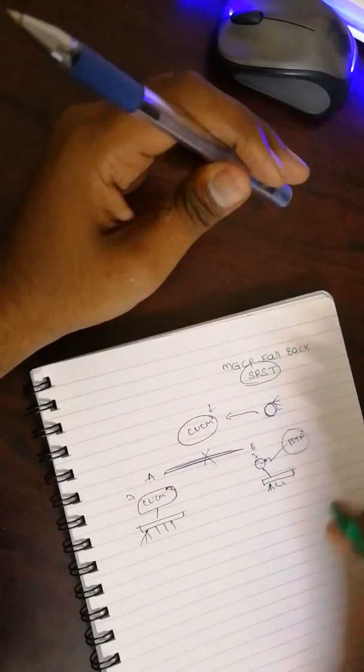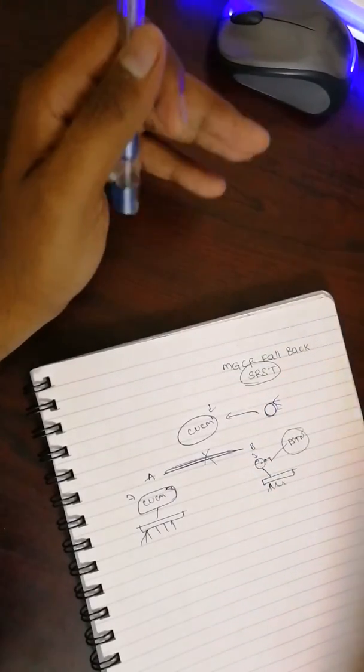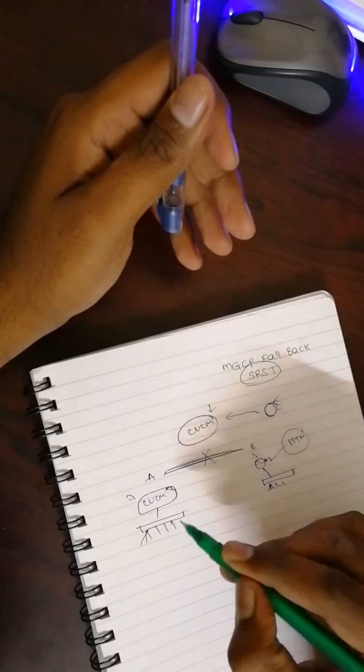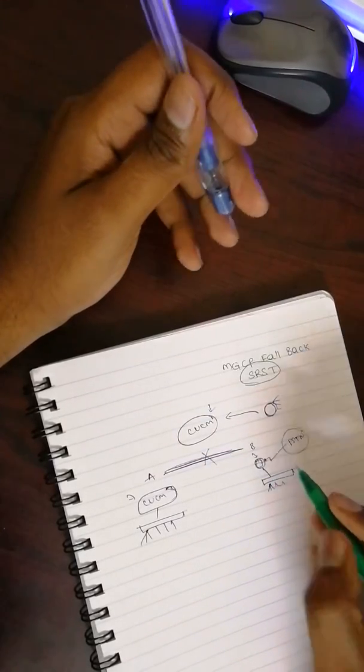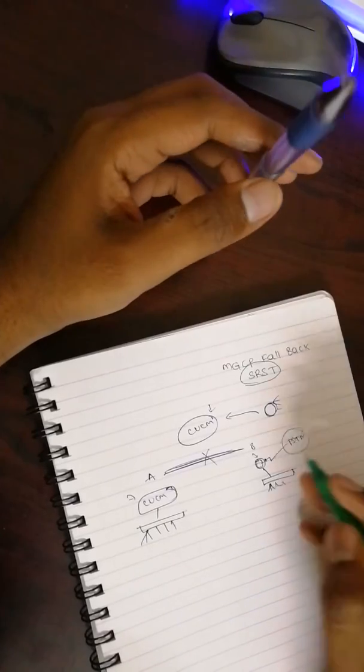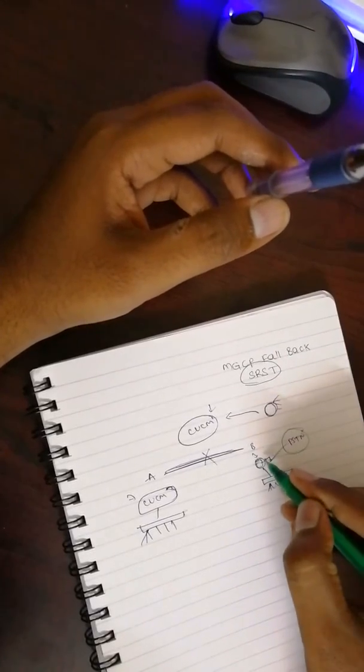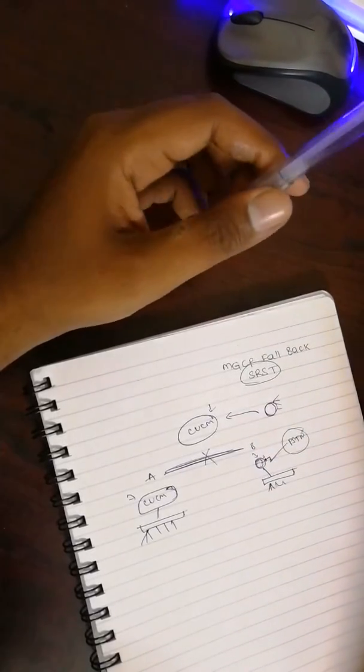In that particular case, we don't have any connectivity, we don't have the reachability between Site B to Site A, so the T1 or E1 link, the PSTN connectivity here will not be accessible.